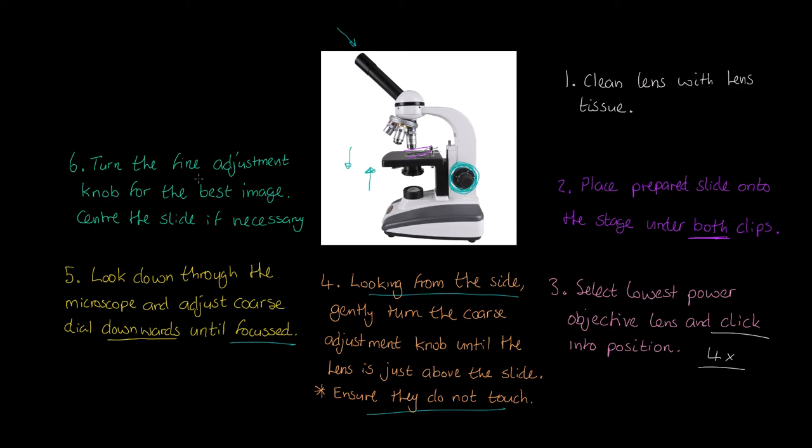Next, we're now going to start using the fine adjustment knob. We're just going to tweak and play with that until we get the best image, the sharpest image that we can find. And just notice this point here. If need be, we're going to re-center the prepared slide, or adjust it so it's in the correct position to get that best image. And finally, we're going to rotate the nose piece to click the higher power lens into position. And then what we do is, we adjust again on the fine adjustment knob to get that sharp focus with now a more magnified image.